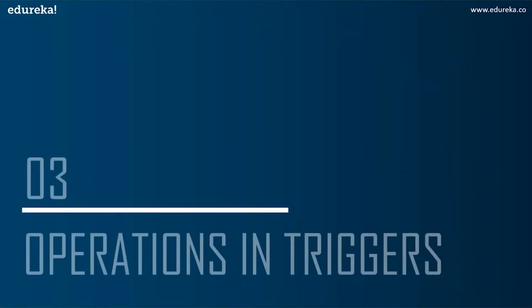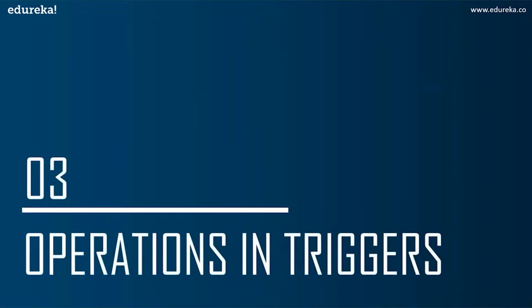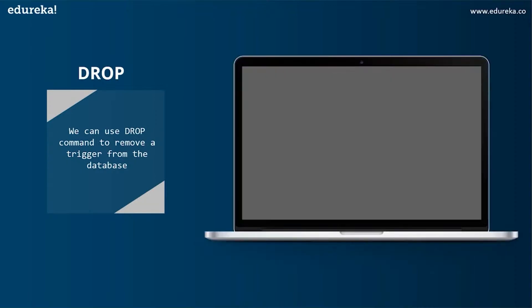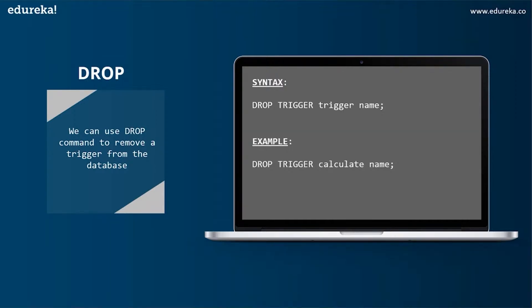Let's now try to implement an example of trigger in SQL. The next topic is operations in trigger. We can perform many operations using triggers — some may be simple and some may be a little complex, but once we go through the query, it's easy to understand. The first operation is DROP. We can use the DROP command to remove a trigger from the database and the syntax for this is: DROP TRIGGER trigger_name.